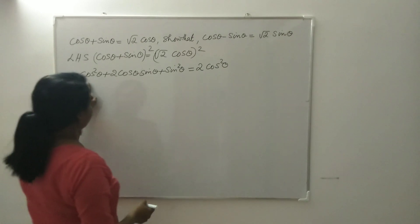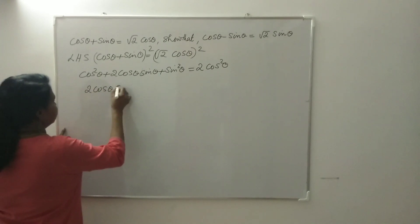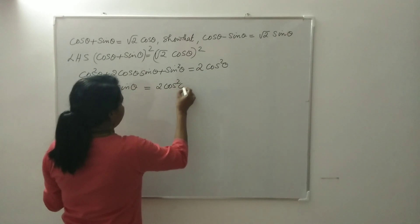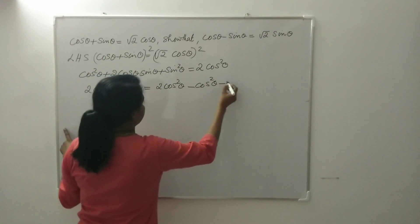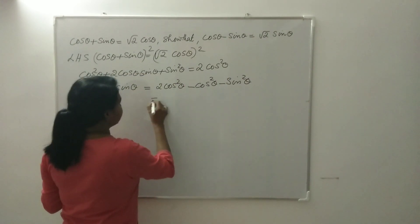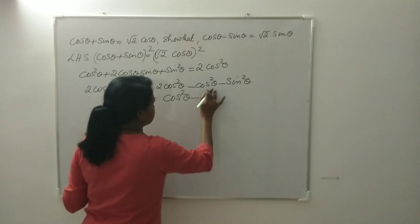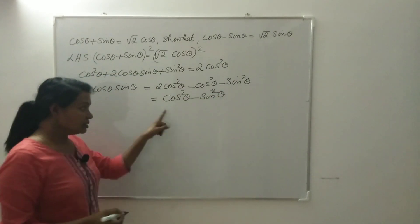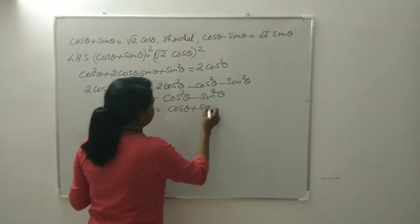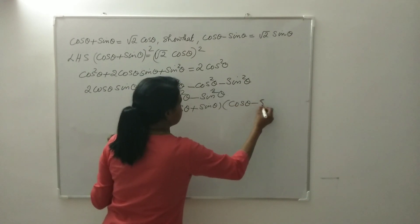Transposing cos²θ and sin²θ to the RHS, we get 2 cos θ sin θ = 2 cos²θ - cos²θ - sin²θ, which simplifies to cos²θ - sin²θ. This is of the form A² - B², so we can write it as (cos θ + sin θ)(cos θ - sin θ).